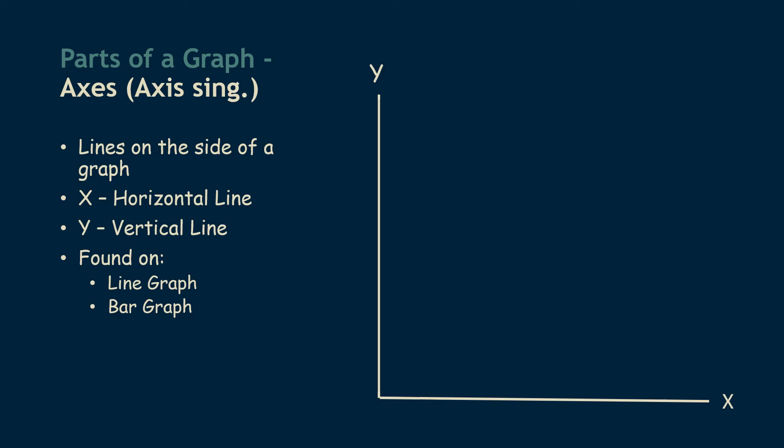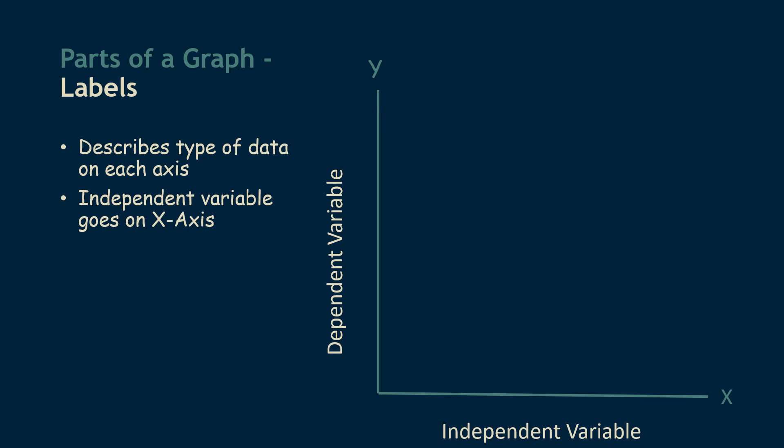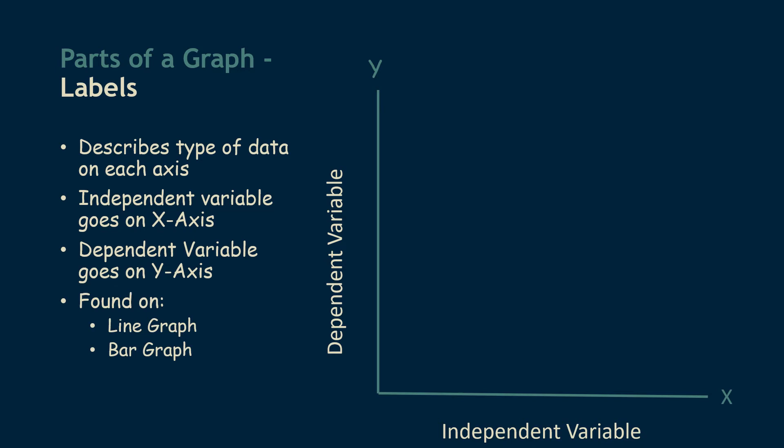Next we're going to talk about labels. The labels are a description of whatever type of data is being measured on that axis — whatever thing we're measuring. It's important to note that the independent variable of an experiment is always going to go on the x-axis, so by looking at which label is on which axis you can tell something about the experiment. The dependent variable will always go on the y-axis. These are found on all line graphs and all bar graphs.